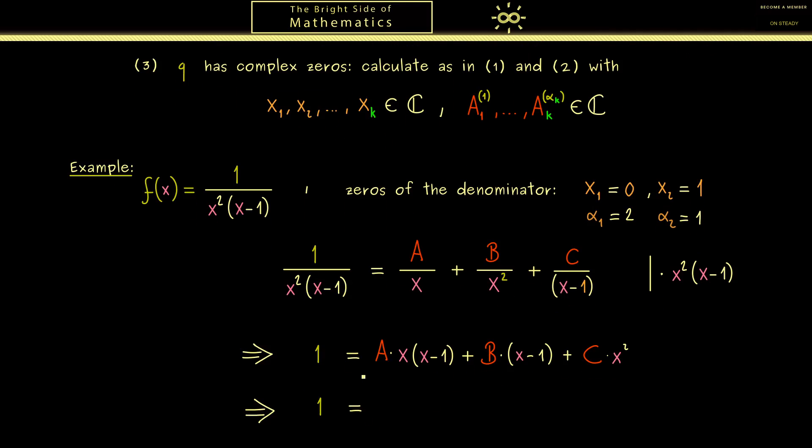Therefore the idea is to bring the right hand side into a standard form for a polynomial. More precisely this means we have x² times the coefficient plus x times the coefficient plus 1 times the coefficient. Hence we expand here and then we factor out again.